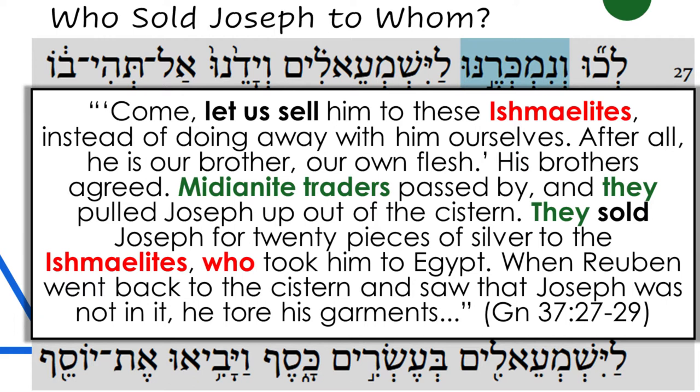Why do scholars ask about who wrote the Pentateuch? For a long time, the synagogue and the church agreed that Moses wrote it. Let's look at a few reasons why that explanation is unpersuasive. In Genesis chapter 37, the story of Joseph being sold into slavery, the speaker is Judah, one of his brothers: 'Come, let us sell him to these Ishmaelites, instead of doing away with him ourselves. After all, he is our brother, our own flesh.' His brothers agreed. Midianite traders passed by, and they pulled Joseph up out of the cistern. They sold Joseph for 20 pieces of silver to the Ishmaelites, who took him to Egypt.